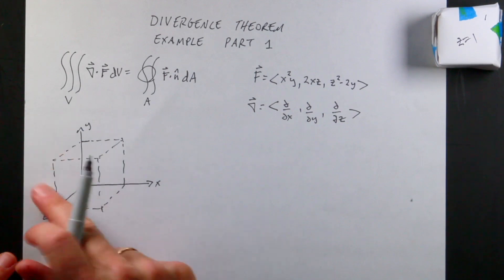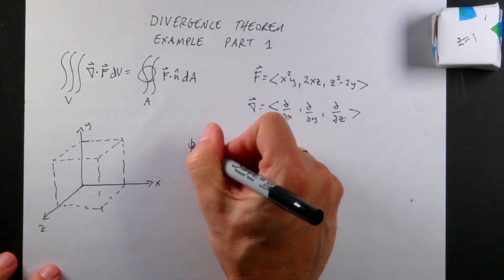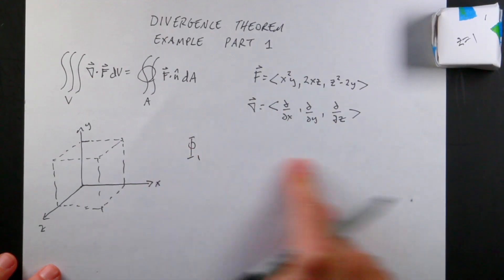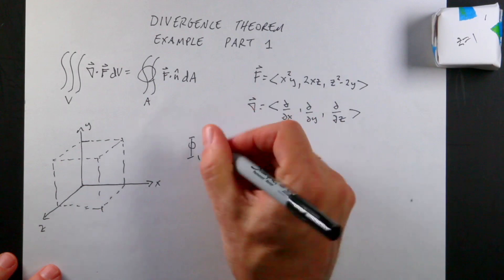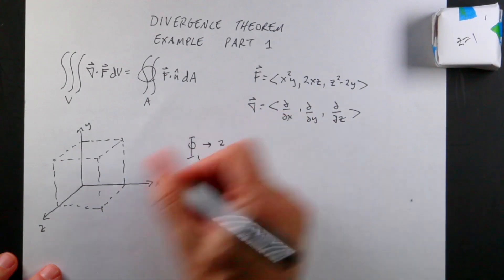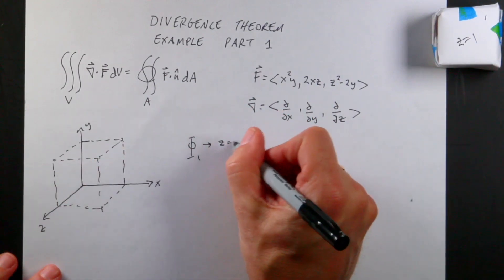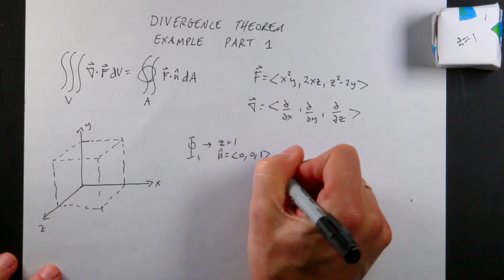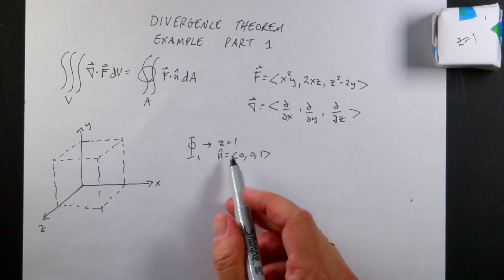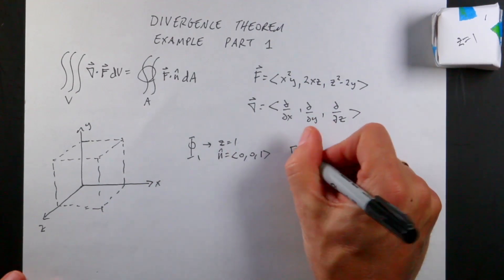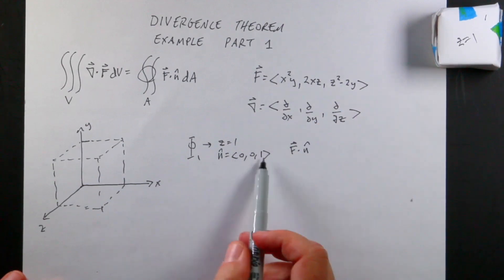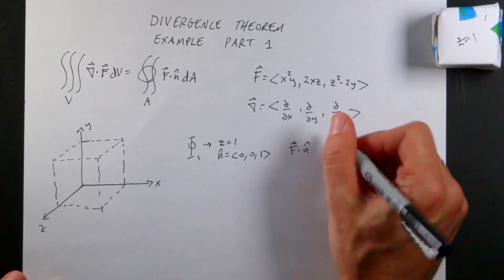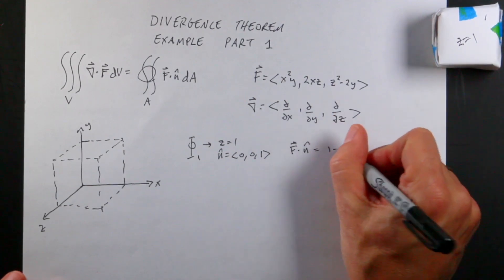Let's do Z equals one — that's surface one right here. I'll call this phi one. On that whole side, Z is constant at one, and N-hat is going to be the vector (0, 0, 1) — the unit vector in the Z direction. So now I can find F dot N-hat. I only get the Z component, and since Z equals one, F dot N-hat is going to be one minus two Y.